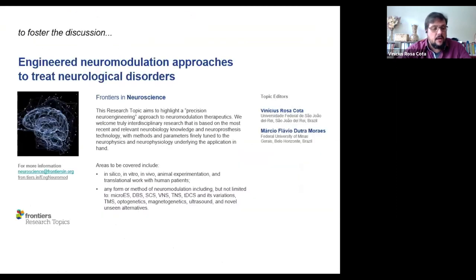And also to foster the discussion, we put together this research topic at Frontiers in Neuroscience. I invite all the community to send their best contributions. It's open to September, the abstract submission. This research topic is entitled Engineering Neuromodulation Approaches to Treat Neurological Disorders. The idea is to put in perspective precision neuroengineering approaches to treat neurobiological disorders. If you haven't seen it, you can send me an email and I'll send you the links from the Frontiers website. You don't need to be specifically invited to participate, but if you want, just send me an email and I'll send you the links.